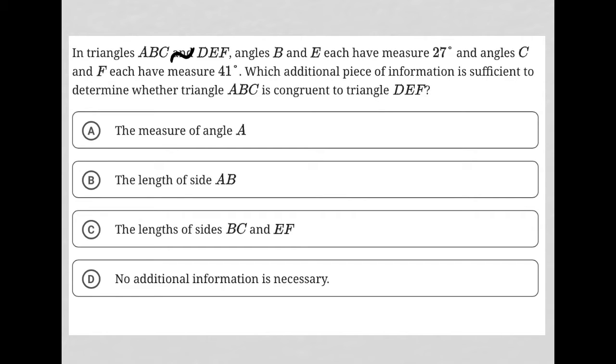So I'm going to draw these triangles. I'm not going to care too much about making my angles look accurate because that doesn't matter. I'm going to label this A, B and C. And then I have this other triangle here in the same order. So A goes with D, B goes with E and C goes with F. I'm remembering that B and E are 27, so this top angle is 27 for both. And C and F are 41, so this bottom right angle is 41 for both.